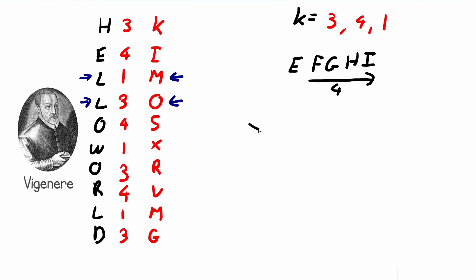One thing to mention is that if we want to shift a character near the end of the alphabet — for example y — and we want to shift it forward past the letters of the alphabet, we rotate back to a. So y shifted forward by three spaces goes y, z, a, b — giving us the letter b.